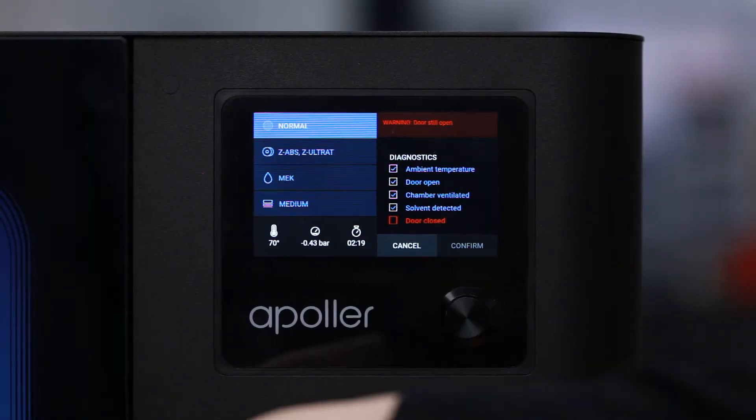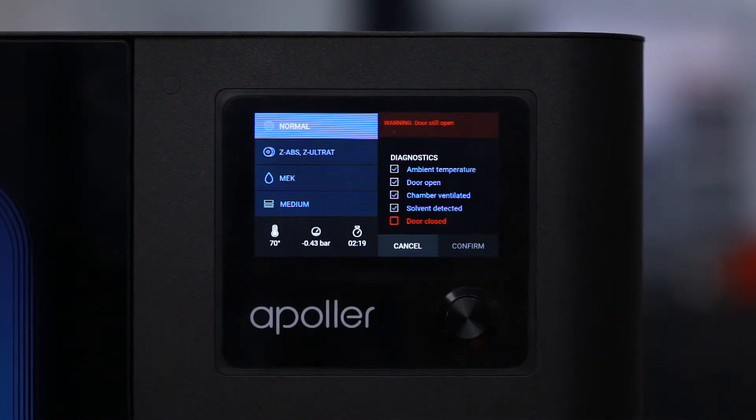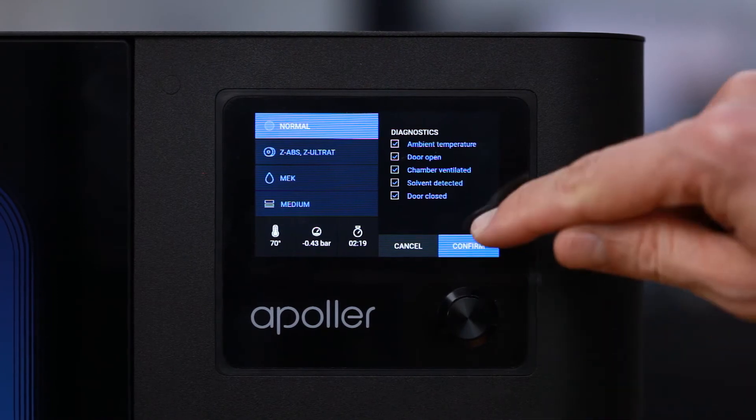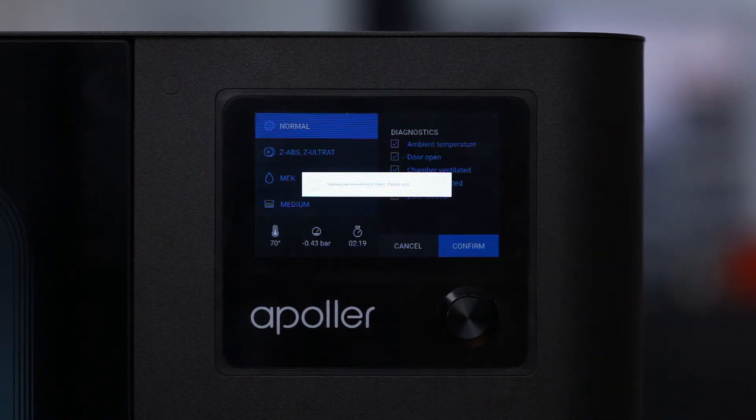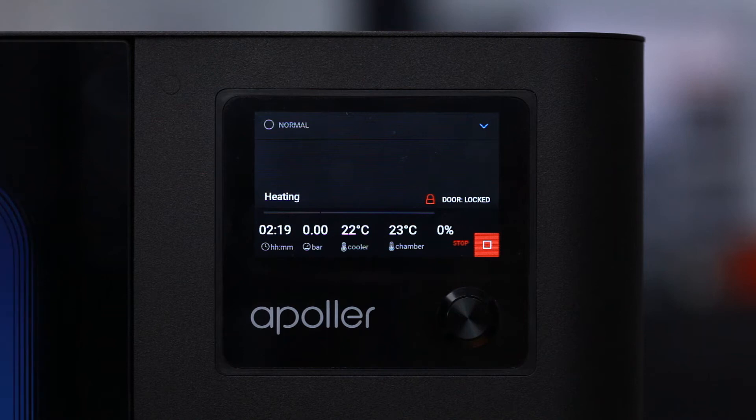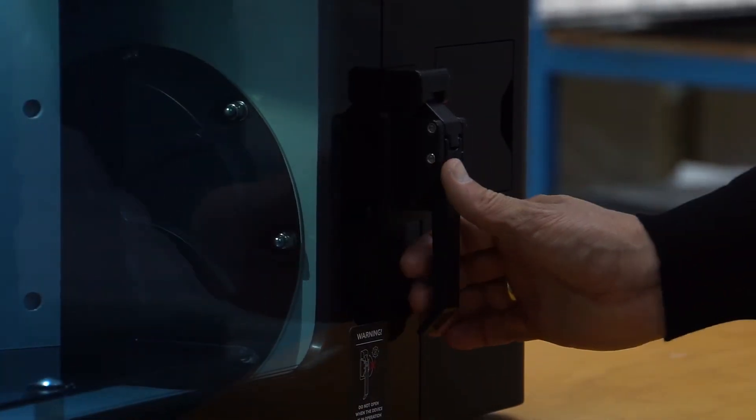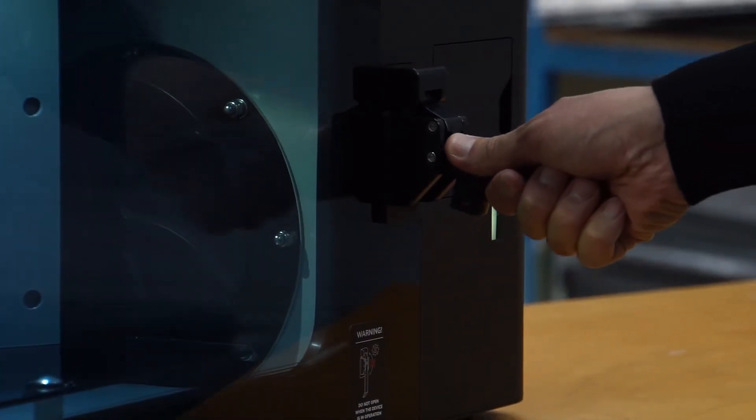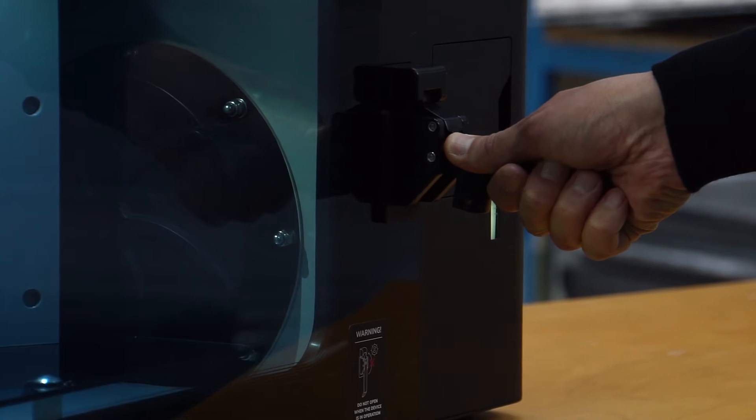After all diagnostic activities have been performed, select Confirmed to begin the smoothing process. All information related to the process and the current state of the device will be displayed on the screen. Once the smoothing is started, the chamber door remains blocked until the end of the process.